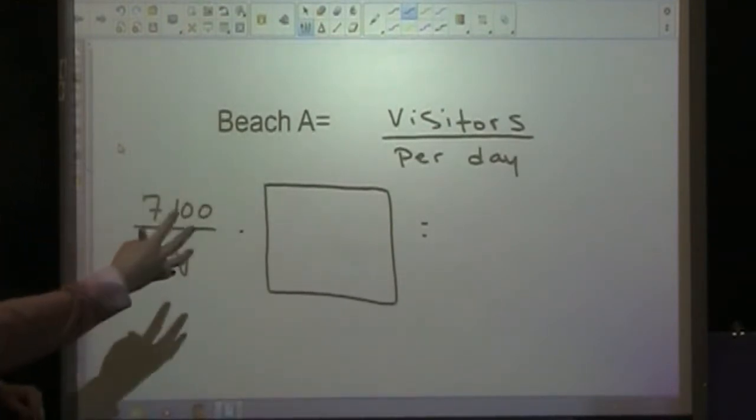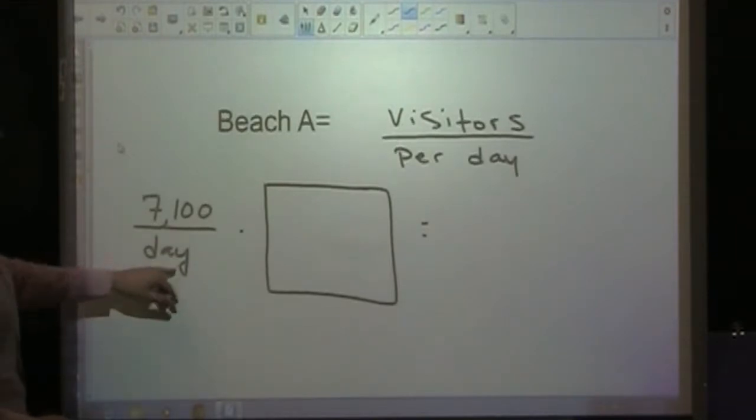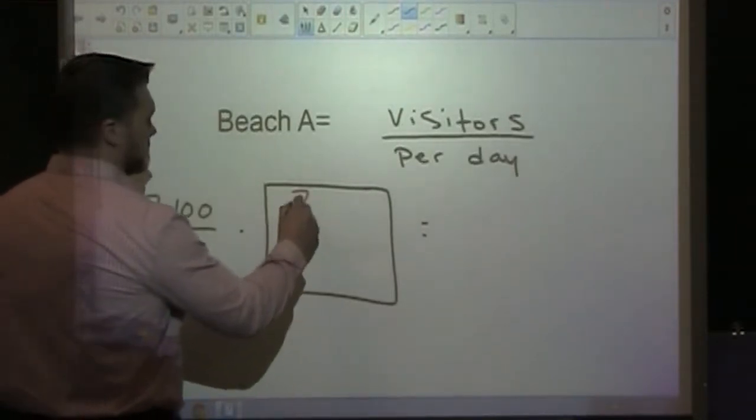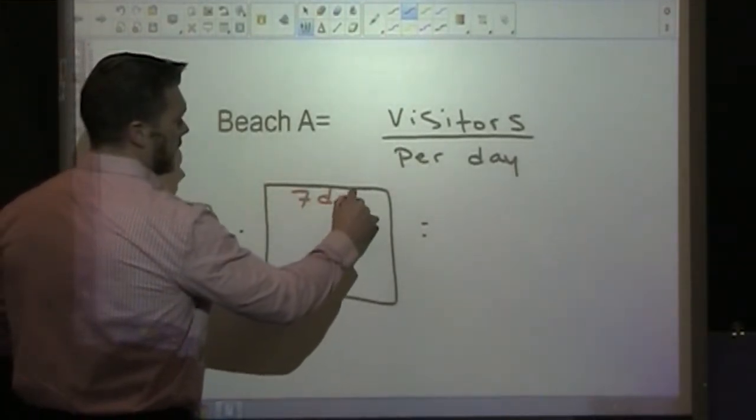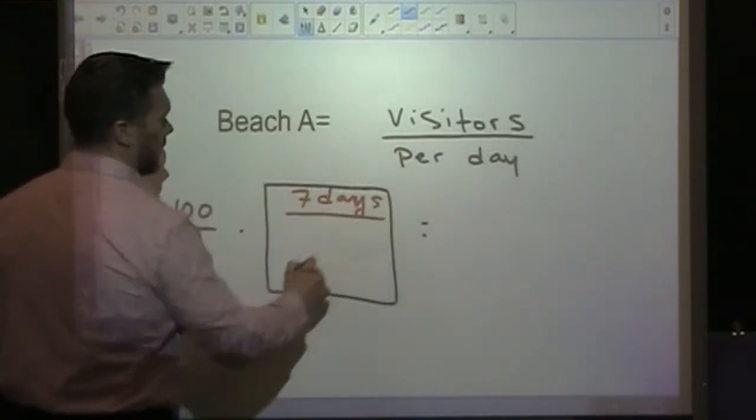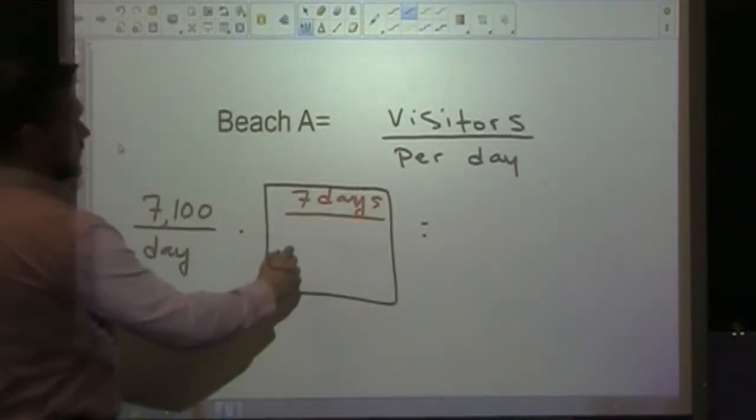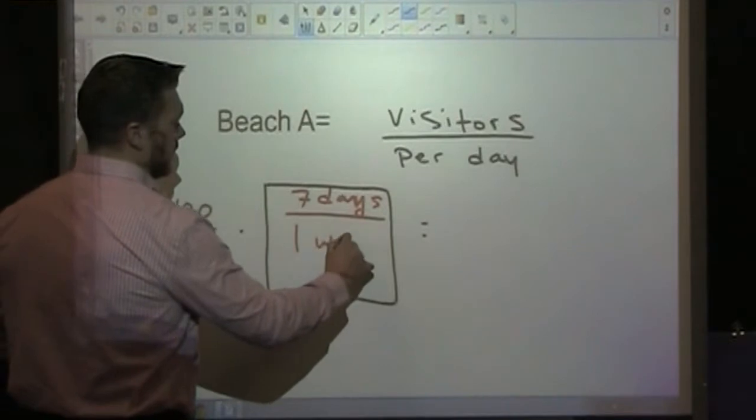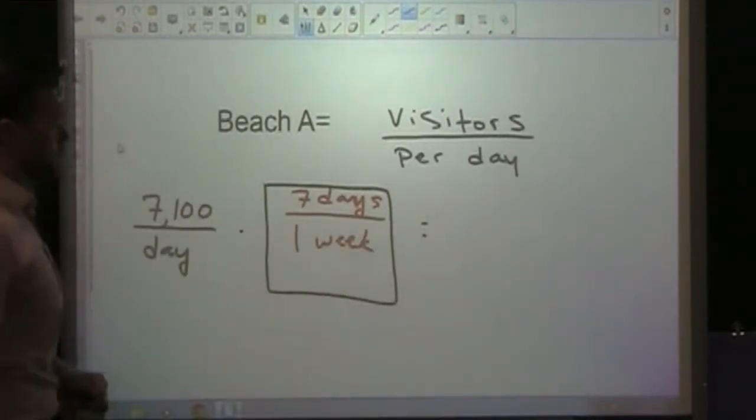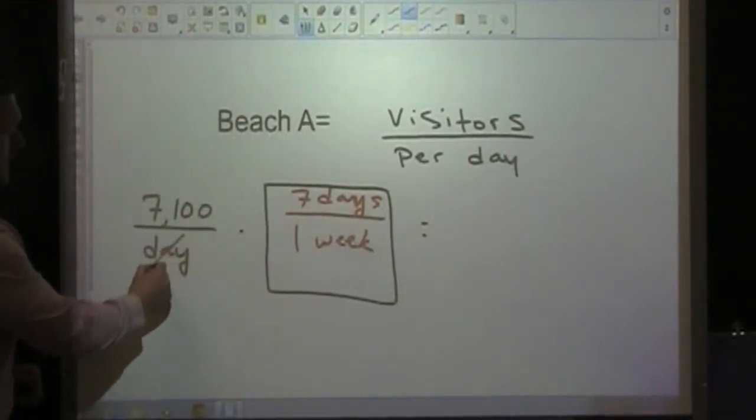Depending on how we're trying to change the rate, in this case, we want our days to be on top. So we'll write seven days on top, and one week in our denominator.